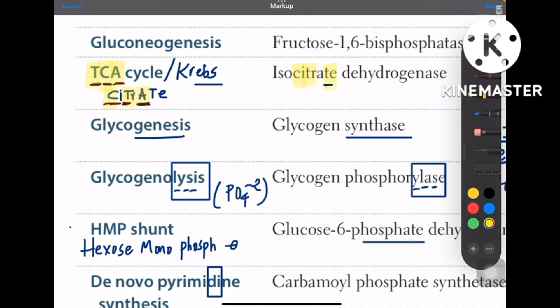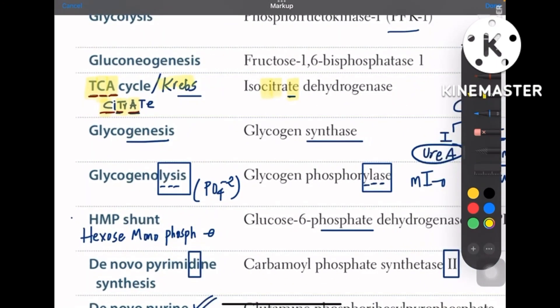Coming to glycogenesis, genesis is something regarding synthesis, right? So glycogenesis is glycogen synthase, whereas glycogenolysis is addition of phosphate group, that is glycogen phosphorylase.